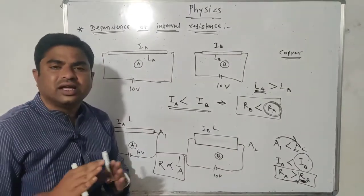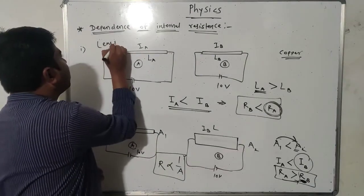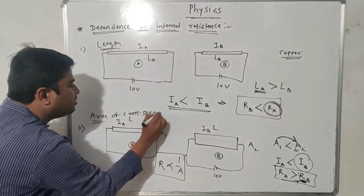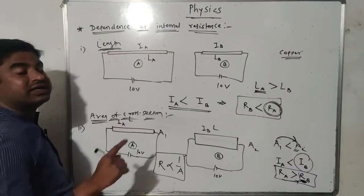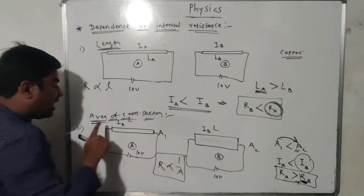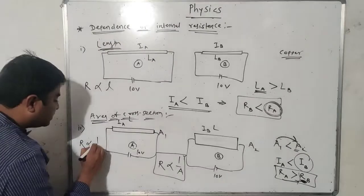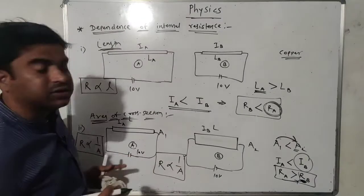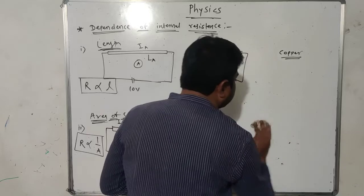So the internal resistance of any wire depends mainly on the length of the wire and the area of cross-section. The internal resistance R is directly proportional to length, and inversely proportional to area of cross-section. These are the two main factors on which the internal resistance of a wire depends. Now let us take another example to further understand the dependence of internal resistance.